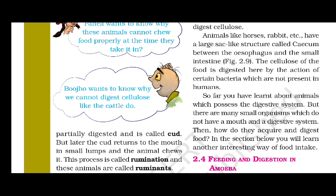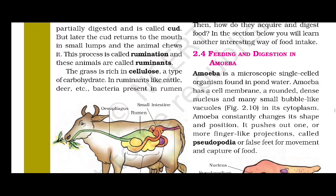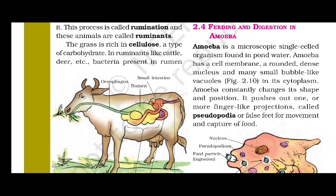So far you have learned about animals which possess a digestive system. But there are many small organisms which do not have a mouth or a digestive system. How do they acquire and digest food? In the sections below you will learn another interesting way of food intake — we are now going to learn about feeding and digestion in amoeba.